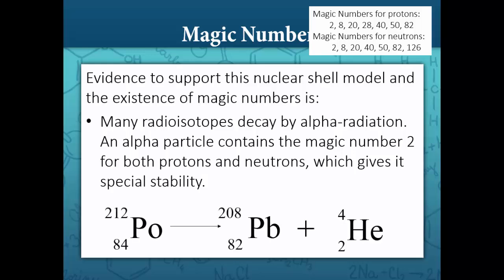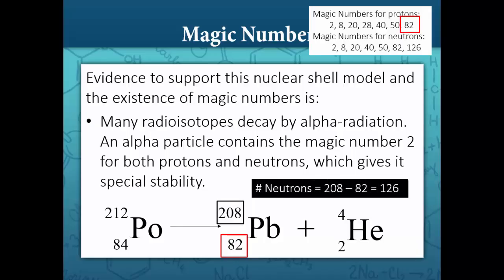For example, consider the alpha decay of polonium-212. When polonium-212 undergoes alpha decay, it becomes lead-208. Lead-208 contains a magic number of protons — 82 — and a magic number of neutrons: 208 minus 82 equals 126 neutrons, which is also a magic number. Therefore, we would expect lead-208 to be stable and not undergo radioactive decay.